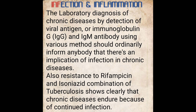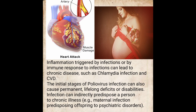The laboratory diagnosis of chronic diseases by detection of viral antigen or immunoglobulin G (IgG) and IgM antibody using various methods should ordinarily inform us that there is an implication of infection in chronic diseases. When we talk of IgM and IgG, the IgM is the first to be produced. IgM production does not last long before IgG is produced, and that takes almost forever as long as infection is there — that's why it is one of the parameters used to confirm that an infection is chronic. Also, resistance to rifampicin and isoniazid combination in tuberculosis clearly shows that chronic diseases endure because of continued infection. Inflammation triggered by infection or by immune response to infection can lead to chronic diseases such as chlamydia infection and cardiovascular diseases.